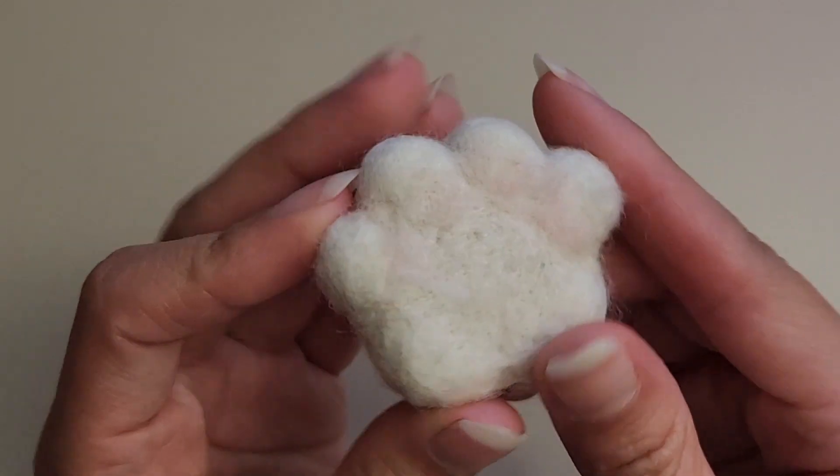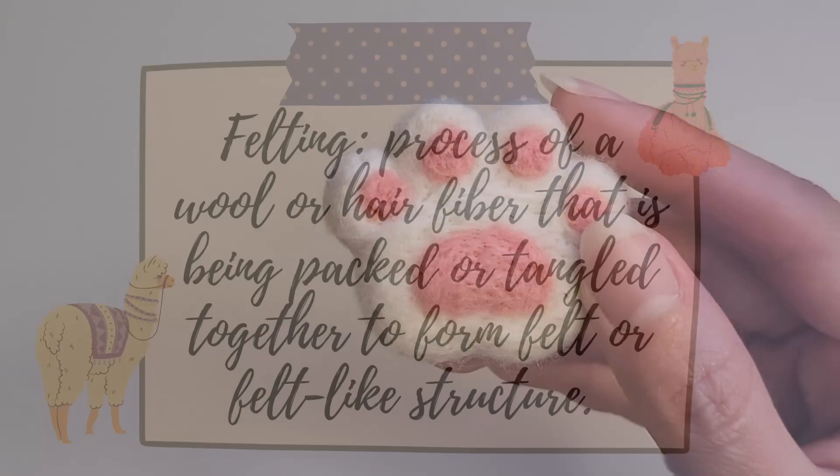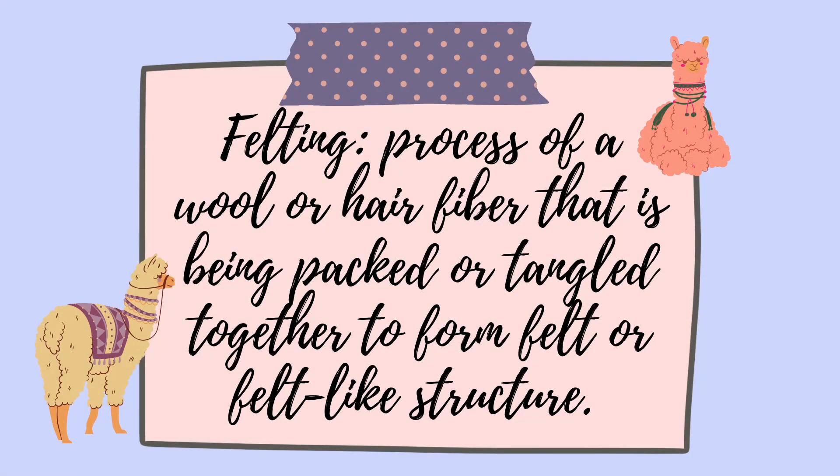Before I get started with the process, I want to go over the term felting and some safety rules. So what is felting? Simply put, felting is a process of a wool or hairy fiber that is being packed or tangled together to form felt or felt-like structure.